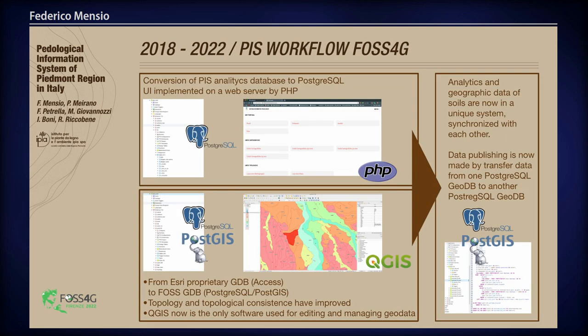In 2018, we decided to make a transition to FOSS4G software. It was not a very simple transition due to the complexity of the data and the amount of data for the analytic part. So we started with two parallel activities. The first one is the conversion of the Visual FoxPro database to a PostgreSQL database, and we implemented a user interface on a web server using PHP. In parallel, at the same time, we made a transition from the ESRI proprietary geodatabase — which is not really a database but a container of data — to the FOSS4G database with PostgreSQL and PostGIS.